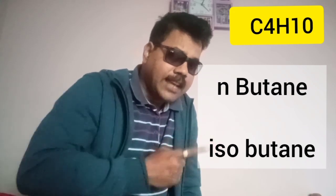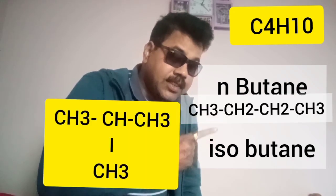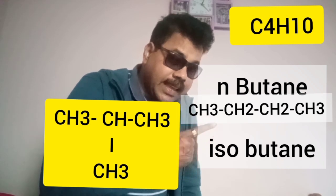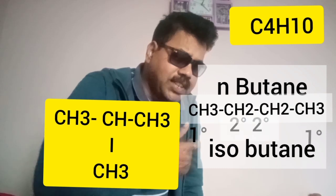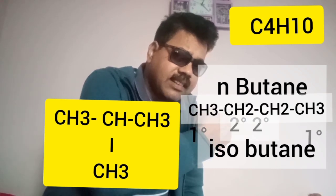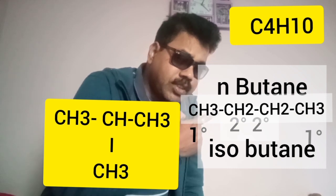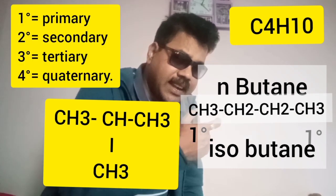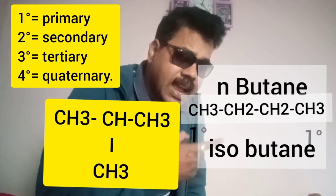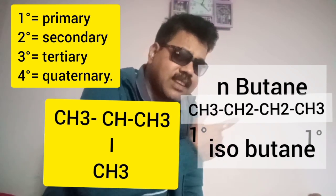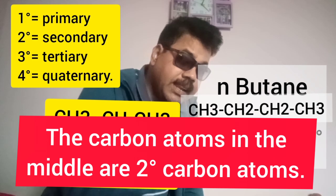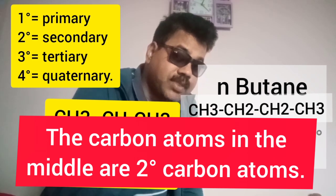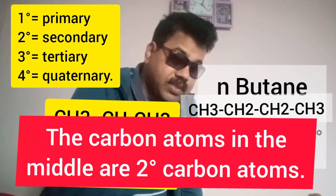N-butane means straight chain; isobutane means the isomer of n-butane, and you can see there is branching in isobutane. In case of n-butane, you will find two types of carbon atoms: primary and secondary. The first carbon and the last carbon are primary carbon atoms, and the hydrogen atoms attached to the first and last are primary hydrogen atoms. The carbon atoms in the middle are secondary carbon atoms, and the hydrogen atoms attached to secondary carbon atoms are secondary hydrogen atoms.